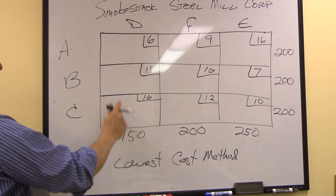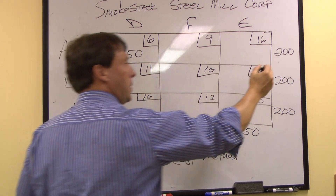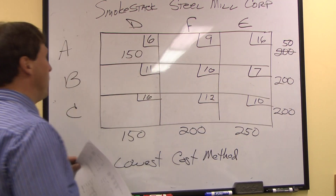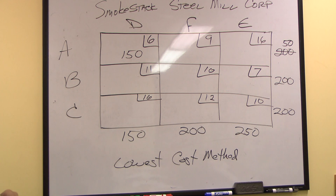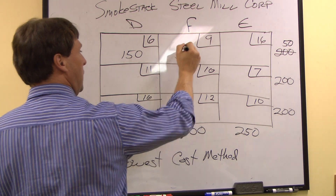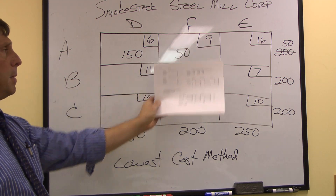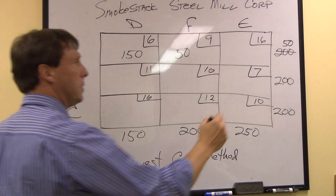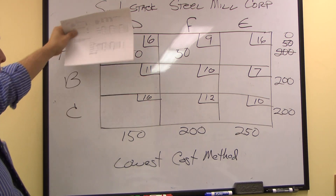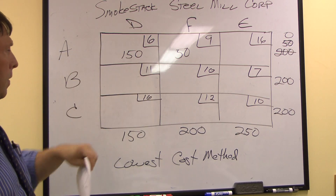The demand from Detroit is 150 units, which brings our supply from Anaheim down to 50. The next lowest shipping cost from Anaheim is $9, which brings our supply down to 0. So right now Anaheim and Detroit are taken care of.